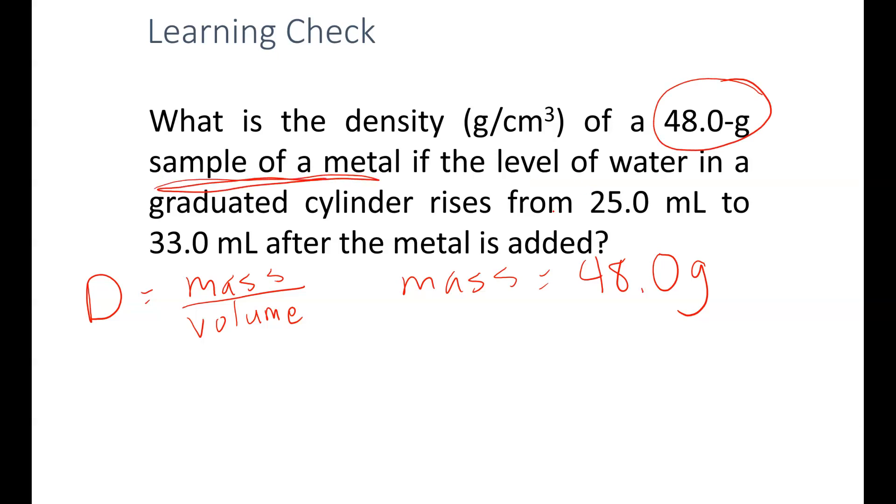The volume I can't find directly—I don't have anything in the problem that specifically tells me the volume of the metal. But I do know how the volume of the metal affects the volume of the water. So I have a starting volume of 25.0 milliliters, it goes up to 33 milliliters, so I can subtract: 33.0 milliliters minus 25.0 milliliters.